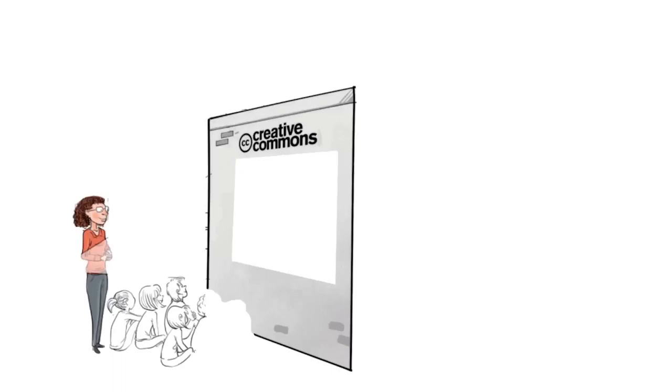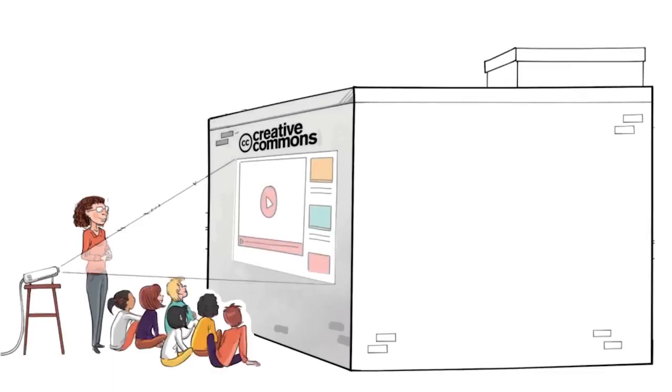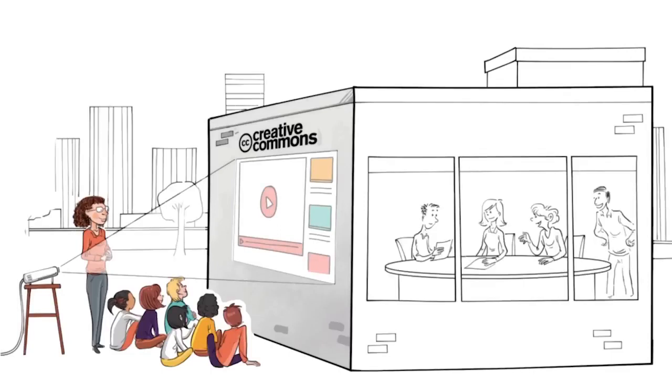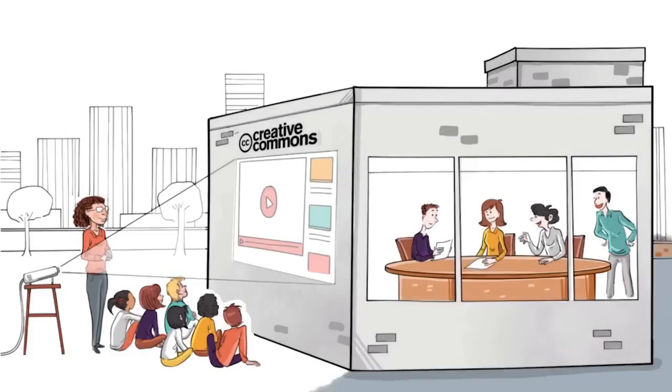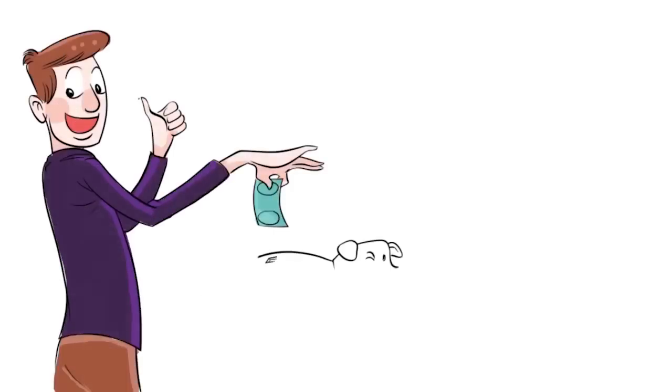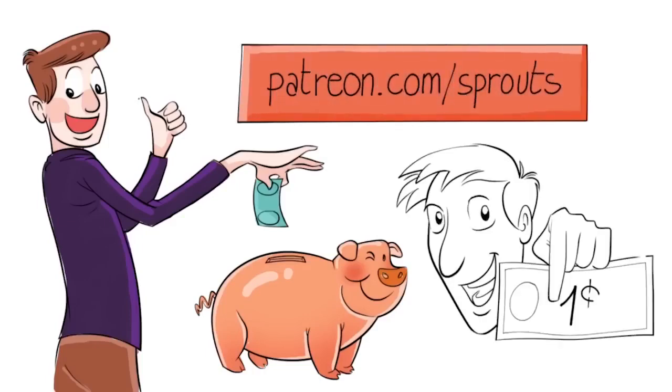Sprouts videos are published under the Creative Commons license. That means our videos are free and anyone can download, edit, and play them for personal use. Public schools, governments, and non-profit organizations can also use them for training, online courses, or designing new curriculums. To help us stay independent and support our work, you can join our patrons and contribute. Just visit patreon.com/sprouts. Even one dollar can make a difference.